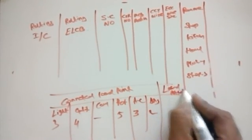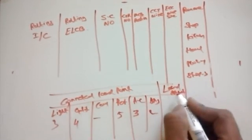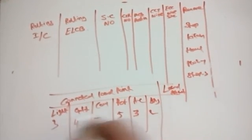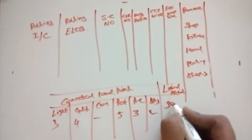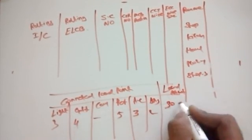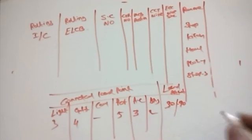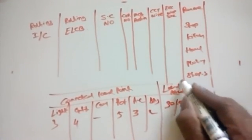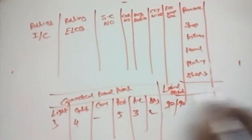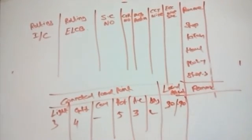Then you mention the load per unit. That means if you are going to connect three numbers of lights and each light has 30 watts per unit, the total is 90 watts. So 90 watts is mentioned in the wattage column. Next, the last column is the remarks column.